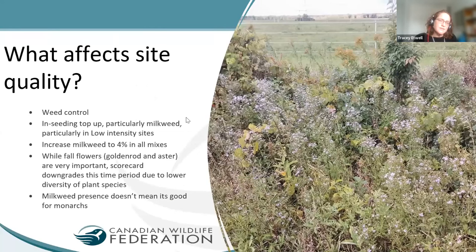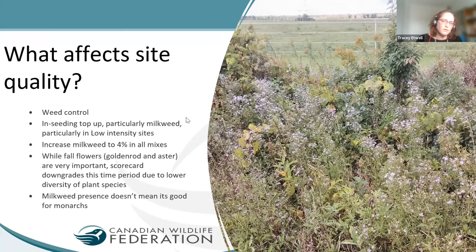Key factors affecting site quality include weed control, seeding as a top-up — particularly milkweed — especially in low-intensity sites with bare soils and lower weed pressure. A goal of 4% milkweed seed in all mixes would help ensure even distribution, as milkweed does well growing alongside other native species. Fall flowers like asters and goldenrods remain important even though the scorecard downgrades them. And milkweed presence alone doesn't mean good habitat — the quality of that milkweed also matters.